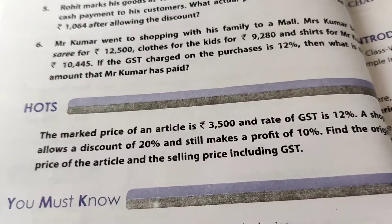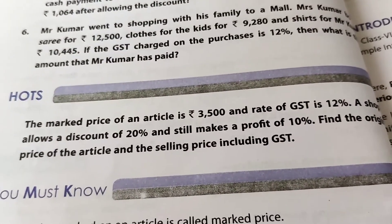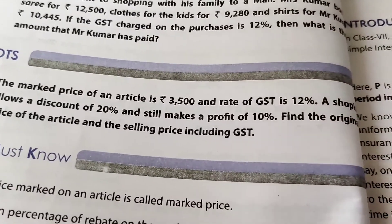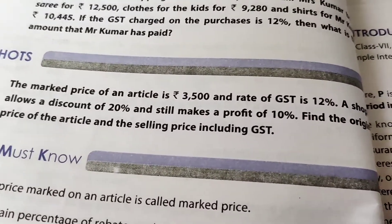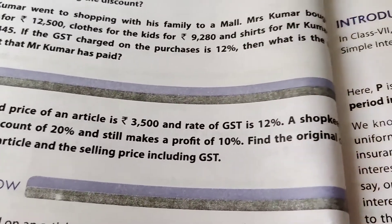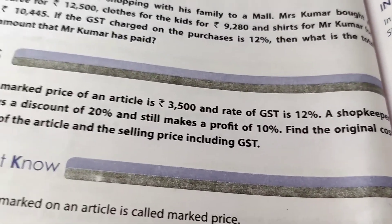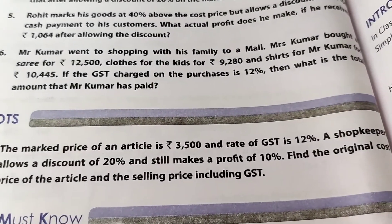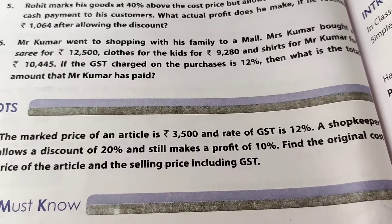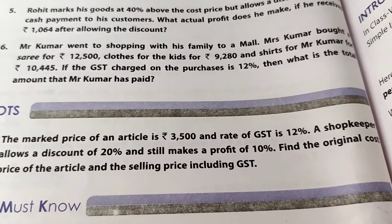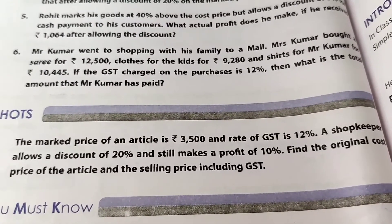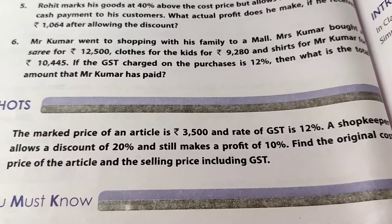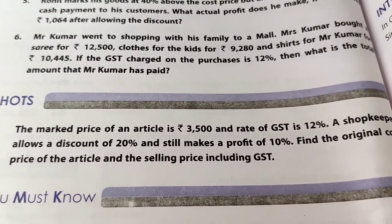This is a hot question from the chapter Profit, Loss and Discount. The mark price of an article is rupees 3500, the rate of GST is 12 percent, a shopkeeper allows a discount of 20 percent and still makes a profit of 10 percent. Find the original cost price of the article and the selling price including GST.